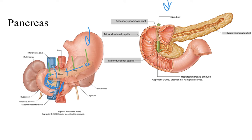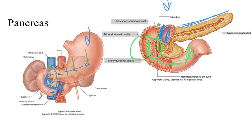Here's a picture showing the pancreas with the pyloric region of the stomach and the pyloric sphincter. Once we get past that, we're in the first, second, third, and fourth parts of the duodenum — the superior part, the descending part, the inferior part, and the ascending part. All of the chemical digestion that comes from other places gets put into the duodenum at the descending part, or the second part of the duodenum.